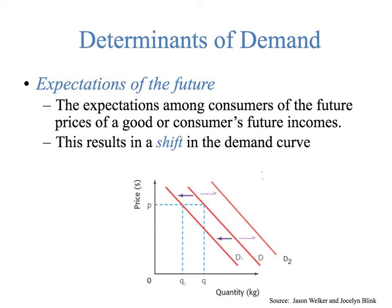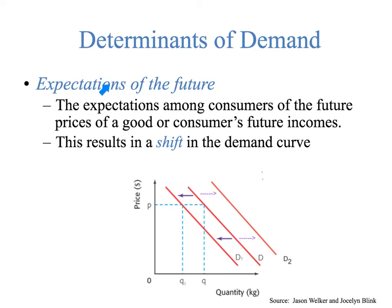Expectations: the expectations among consumers of future prices or future incomes. If somebody thinks the price of something is going to go up in the future, they're going to buy it now. If they think the price will go down in the future, they won't buy it now — so demand would go down. If people expect a big bonus and their income is going to go up, they might start buying before they actually have the money. If you realize you've lost your job and your income is going to go down, you would cut demand for almost all products immediately. Expectations of the future is not on this graph, so it results in an entire shift of the demand curve.